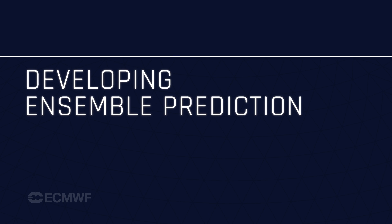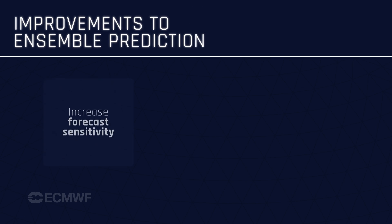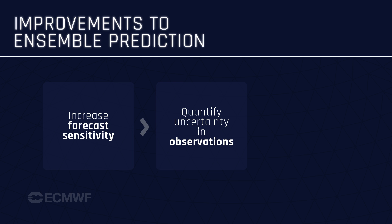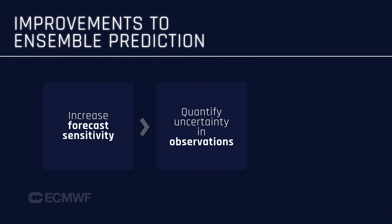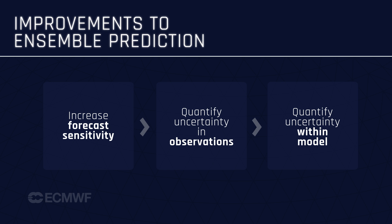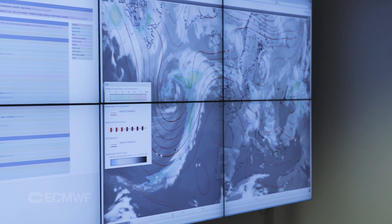At the beginning we were trying to really push the forecast where it was going to be sensitive. Then we started to incorporate some idea on the uncertainty in the observations, quantifying what comes from the uncertainty in the observations themselves. And finally, the third step has been to actually quantify what is the uncertainty in the model itself — we know there are some ranges where some parameters could lie, and so it's quantifying these as well.